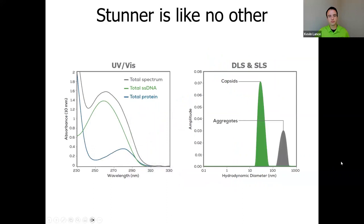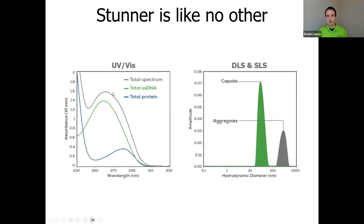When we look at the information more closely, Stunner is unique in the way it analyzes this data. By UV-Vis, we start with the total absorbance spectrum in dark gray, and then Stunner uses advanced spectral unmixing algorithms to break that total spectra down into the underlying DNA and protein components. So instead of just analyzing absorbance at A260 and A280 and hoping for the best, Stunner knows your sample is AAV and can break it down into exactly what the absorbance signal is for your DNA and for your protein. On the DLS side, we get a size distribution showing our capsids as the predominant peak, and in this example, some aggregates present as well.